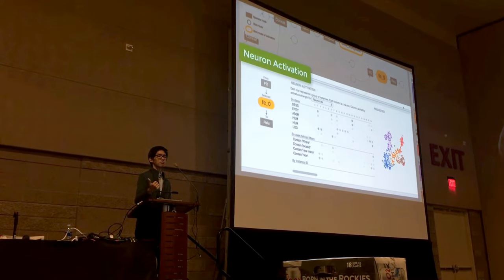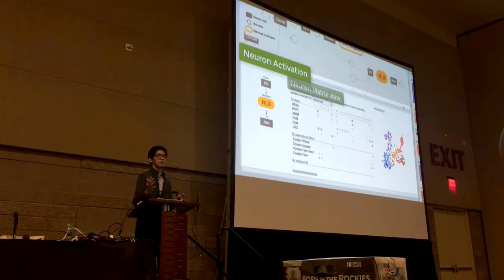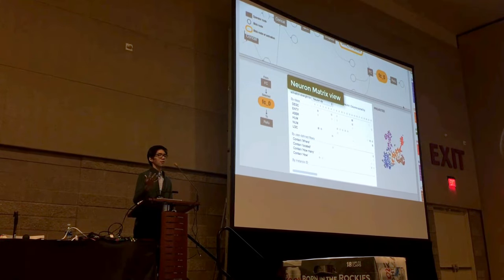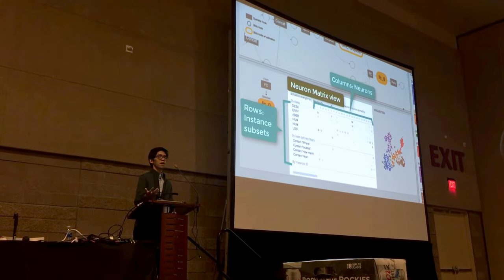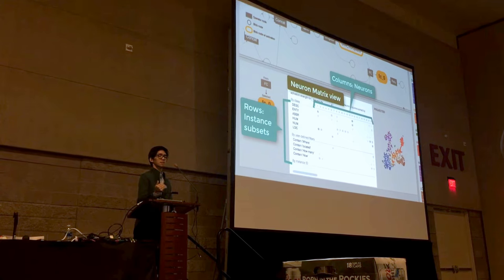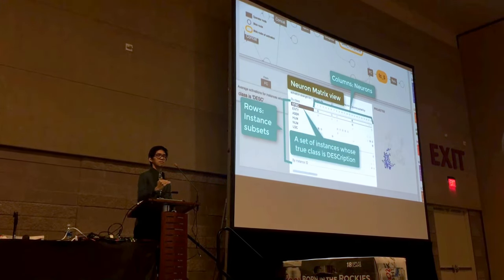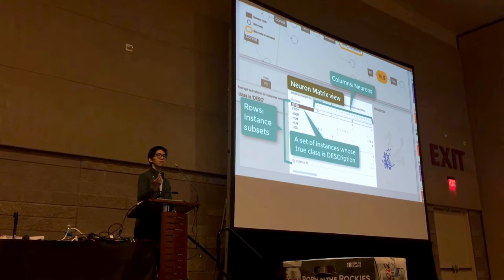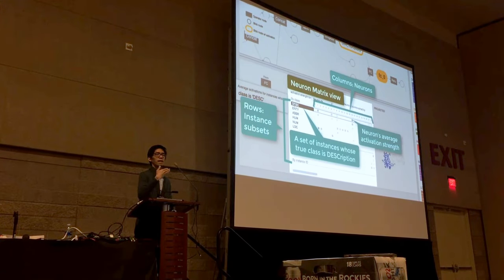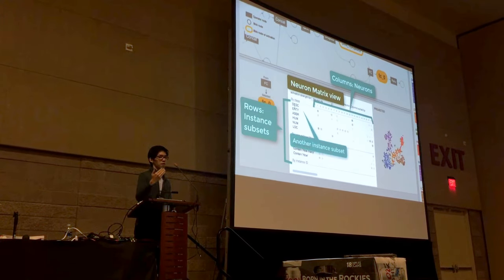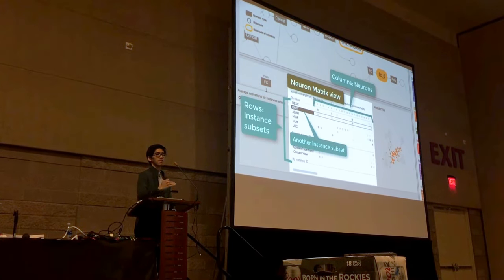A new panel appears at the bottom showing the detailed activation for the selected node. The main component is the Neuron Matrix view. It is structured as a matrix with columns and rows — each column represents a neuron (you can see about 23 neurons here), and each row represents an instance subset. For example, the first row represents the set of instances whose true class is one of the six classes, and each cell shows the corresponding neuron's average activation strength for that subset.